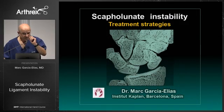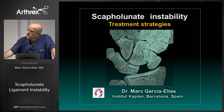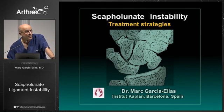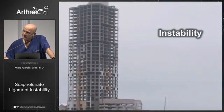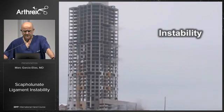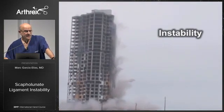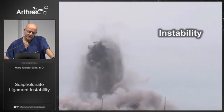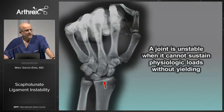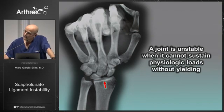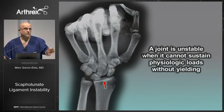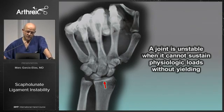I'll be talking about the scaffolding instability and some notions about the treatment. Of course, I will not cover everything. I will try to be concise and to deliver some thoughts. The first thought I want to emphasize is the concept of instability — what's unstable? Instability is the capacity of sustained load. A joint is unstable when it's not able to sustain physiologic loads without yielding. The fact of being able to sustain physiologic loads is what counts.